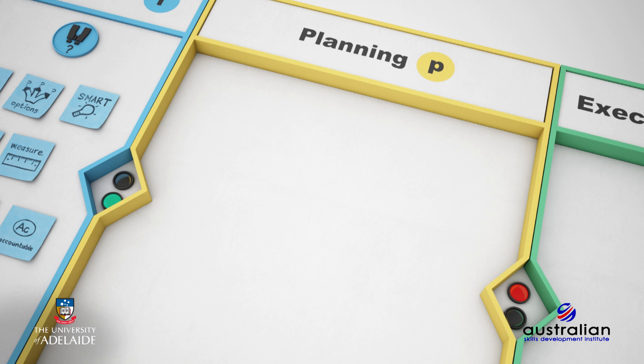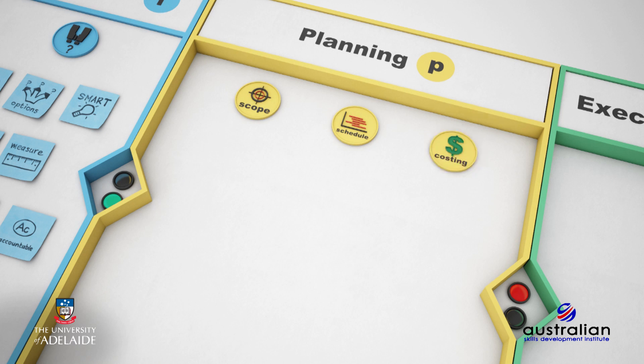Let's use our canvas to develop our thinking. A good starting point is to recap the three main areas that are in the planning phase of the lifecycle, which are scoping, scheduling, and costing.